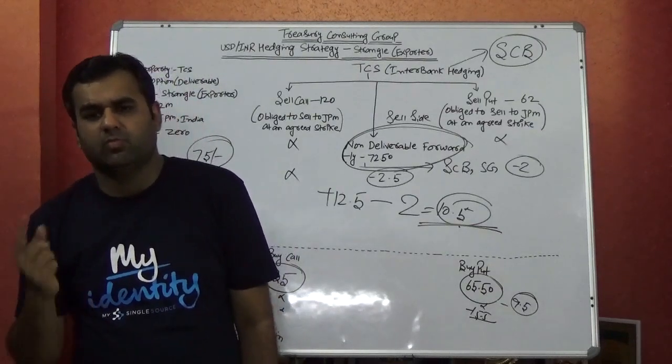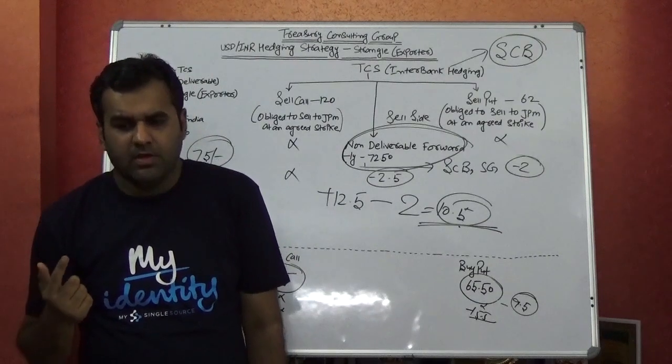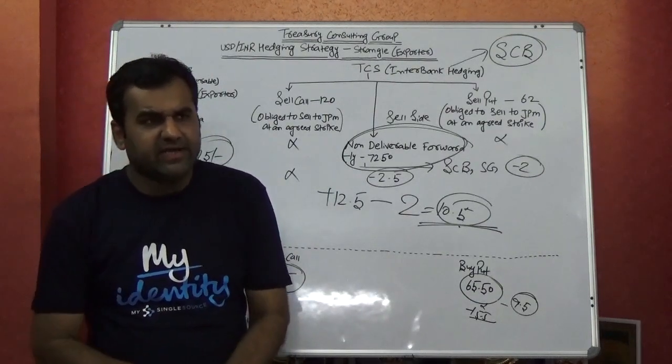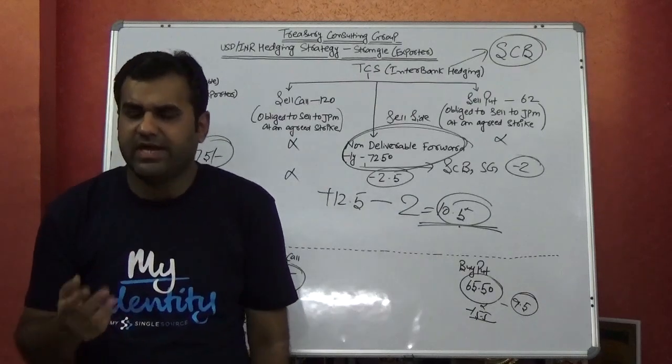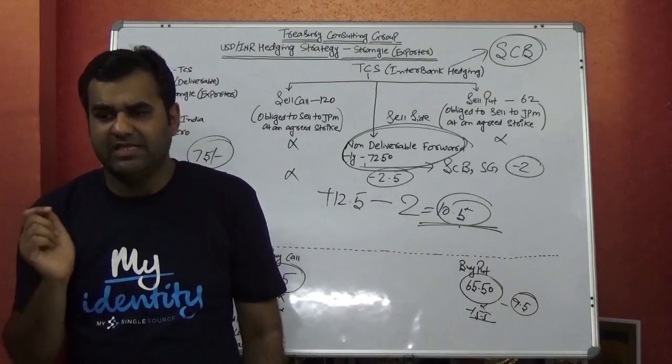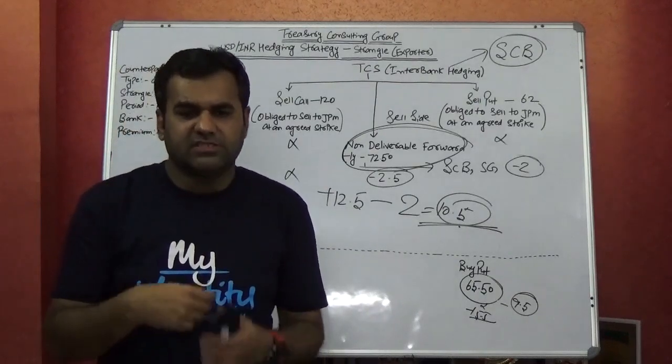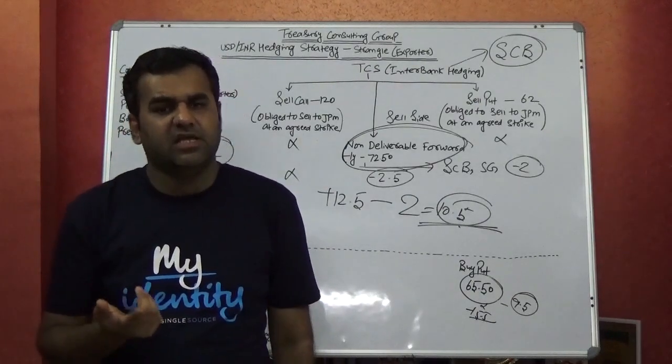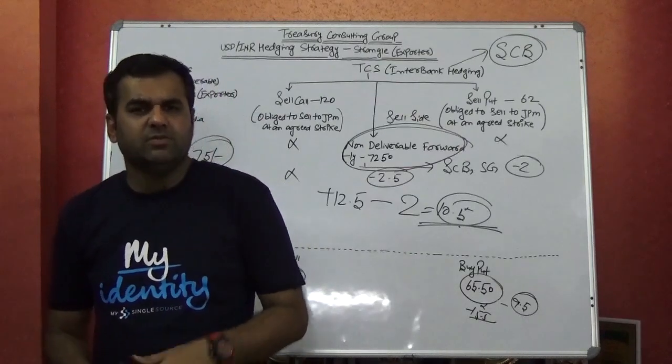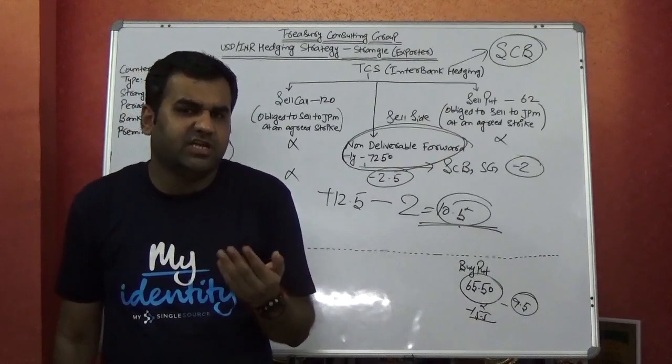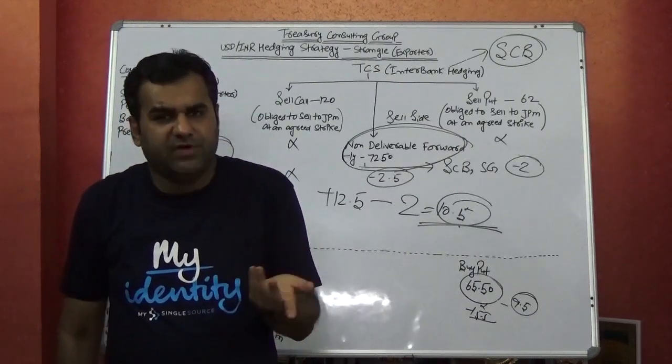But I think Federal Reserve should continue to hike. And the biggest mistake Federal Reserve made this time is that they have given a statement that you should not expect any hike in 2019, rather you expect one hike in 2020, compared to the statement which they gave in 2018 that you should expect three hikes in 2019 and at least two hikes in 2020.